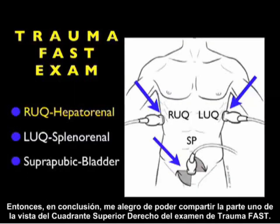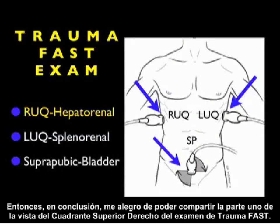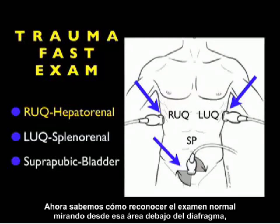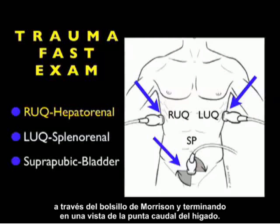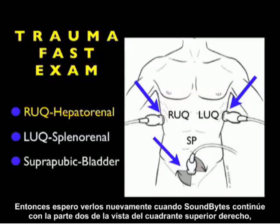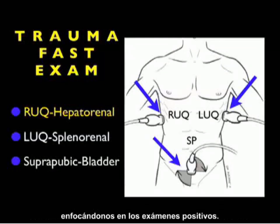In conclusion, I'm glad I could share part one of the right upper quadrant view of the trauma FAST exam. We now know how to recognize a normal examination looking from the area below the diaphragm through Morrison's pouch and terminating at a view of the caudal tip of the liver. I hope to see you back as SoundBytes continues and we look at part two of the right upper quadrant view focusing on positive examinations.